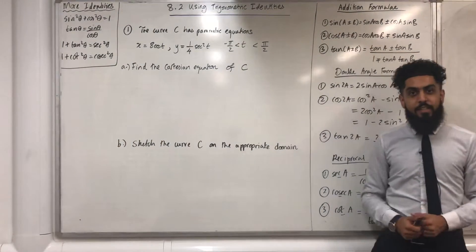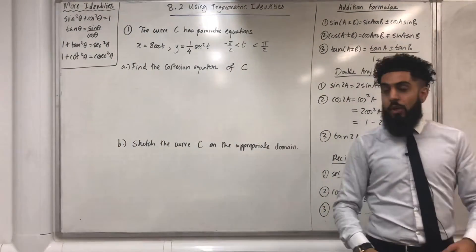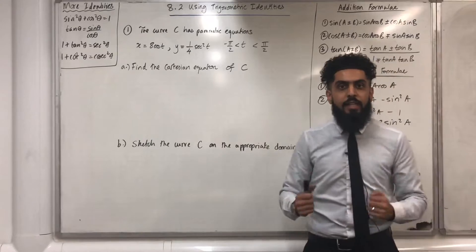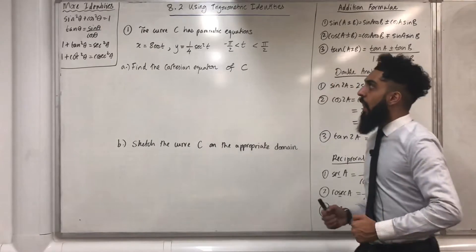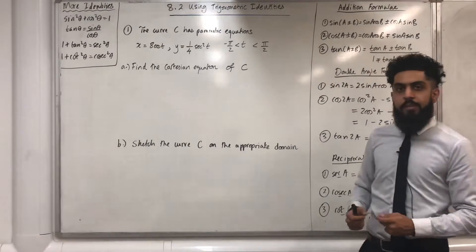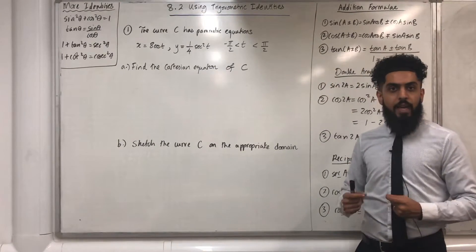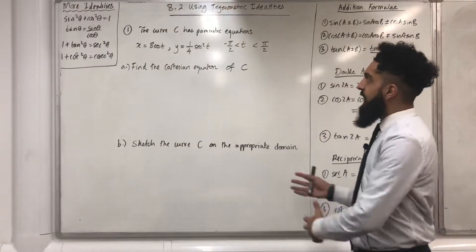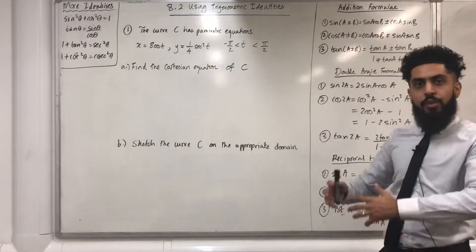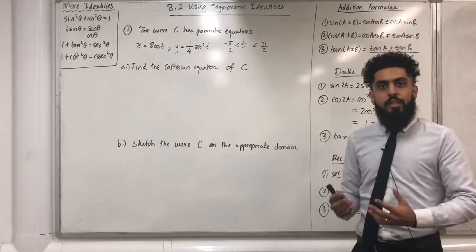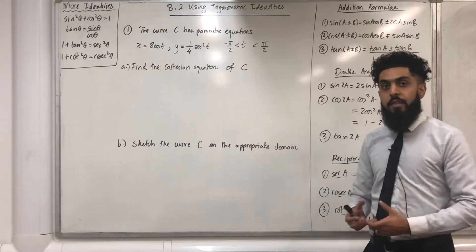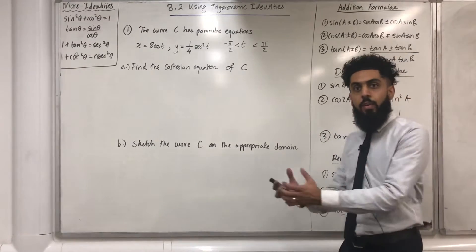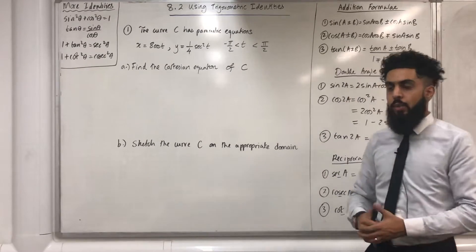Welcome back ladies and gents. In this video I'll be looking at 8.2 using trigonometric identities. 8.2 represents Chapter 8, Section 2 of the Pearson A Level Maths Pure Maths Year 2 textbook. This particular section is all about using trigonometric identities to convert the parametric equations of a given curve into its equivalent Cartesian equation.